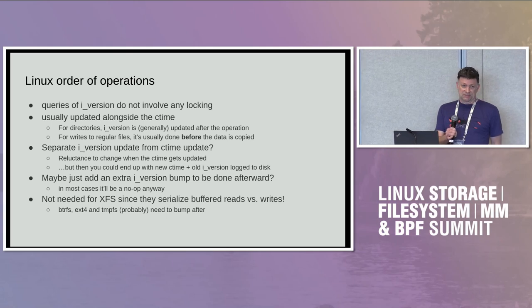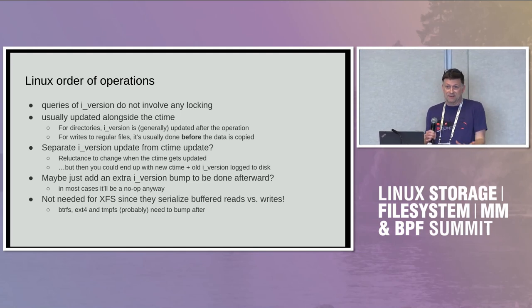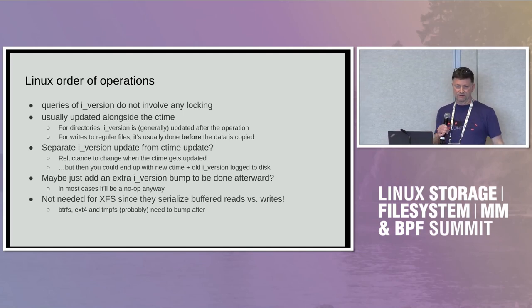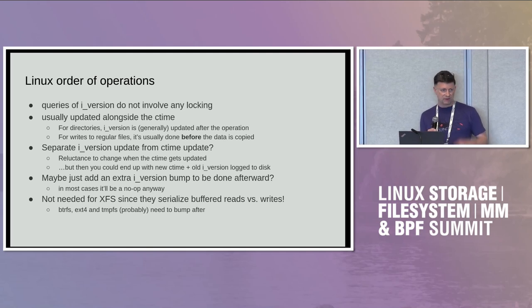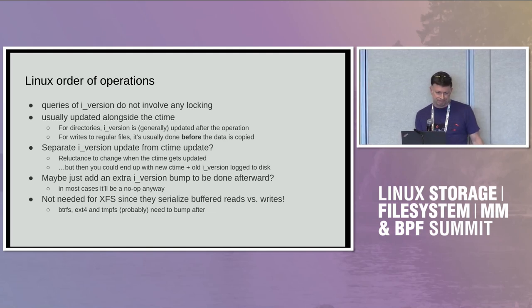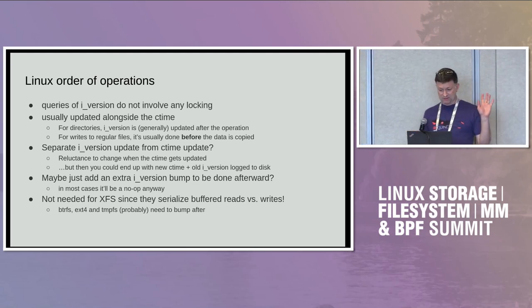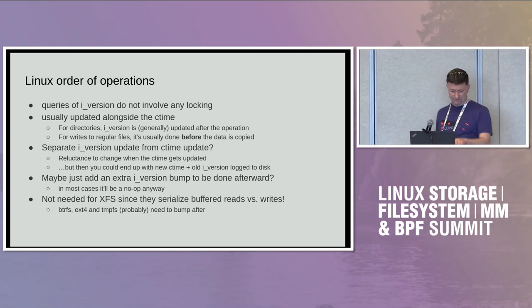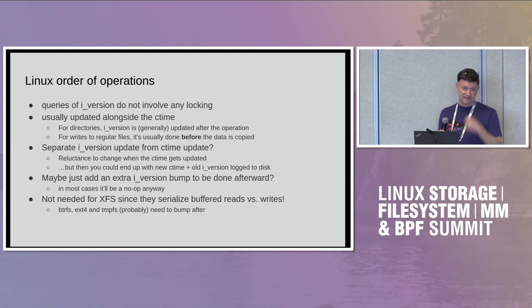Another option is to do an extra iVersion bump every time — bump it before the operation when we set the C time, and do it again afterward. Most of the time that second bump will be a no-op because of the flag-based scheme, unless someone races in with a getattr in between. XFS doesn't need this since they serialize buffered reads versus writes, but ButterFS, EXT4, and TempFS probably need this extra bump afterward.